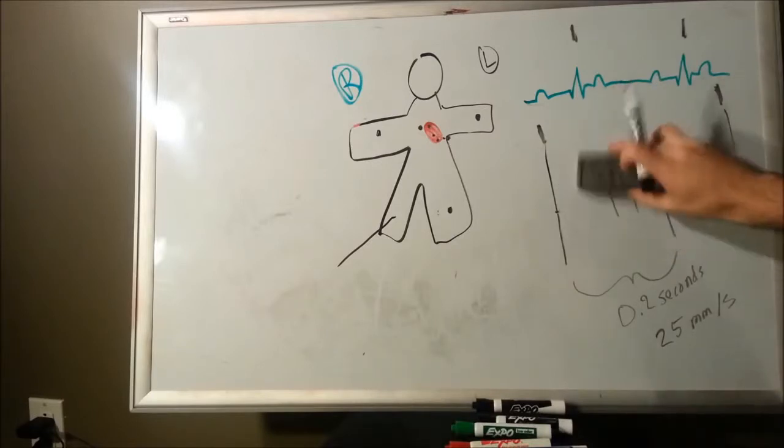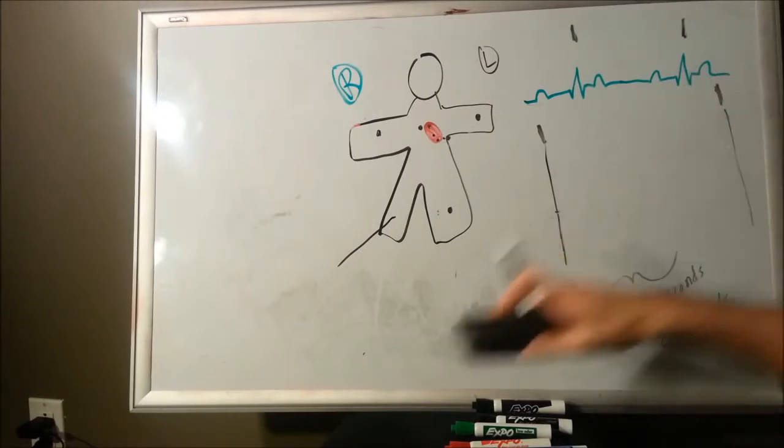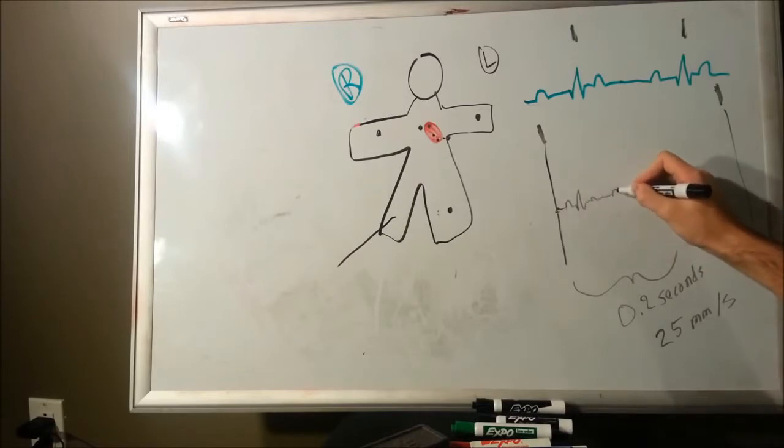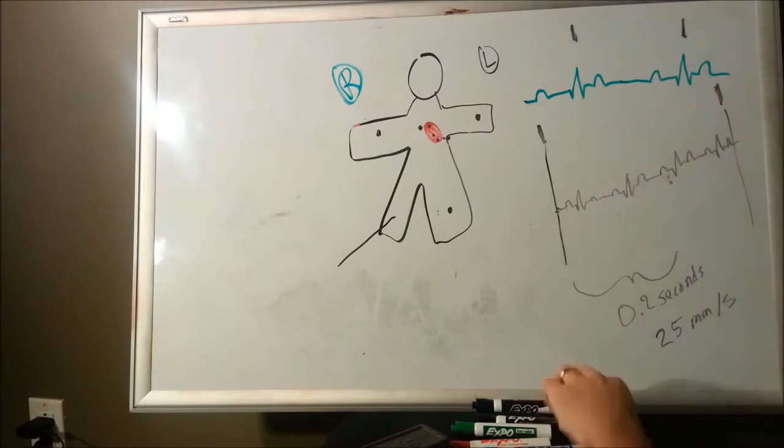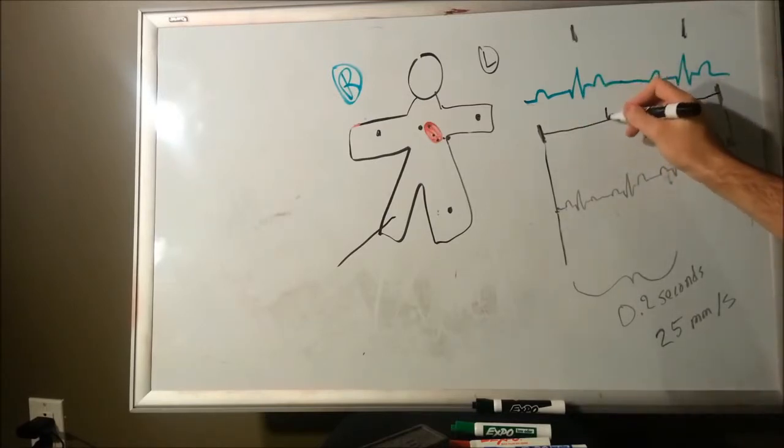Let's say you've got an EKG tracing coming through. You've got these notch marks up at the paper. I'm going to say that it's a six second printout because that's what I typically use. Everything in between, if you know that this is six seconds, you can find the heart rate pretty easily.